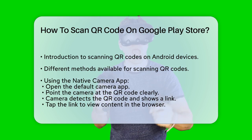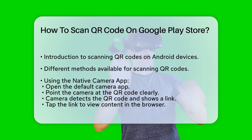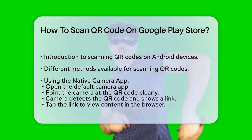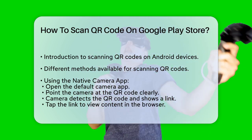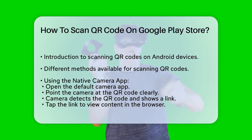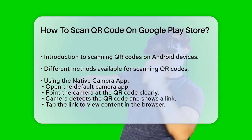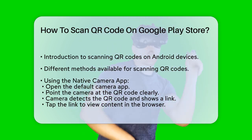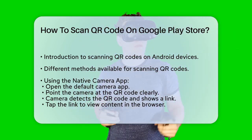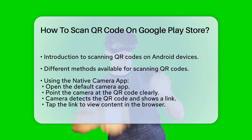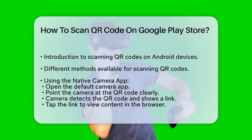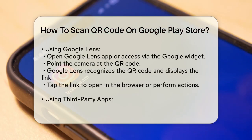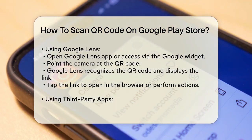Using the Native Camera app. On many newer Android devices, you can use the native camera app to scan QR codes. Open your device's default camera app and point the camera at the QR code — make sure it's clear and not blurry. The camera will automatically detect the QR code and display a link or prompt on your screen. Tap on this link or prompt to view the content in your device's default browser.